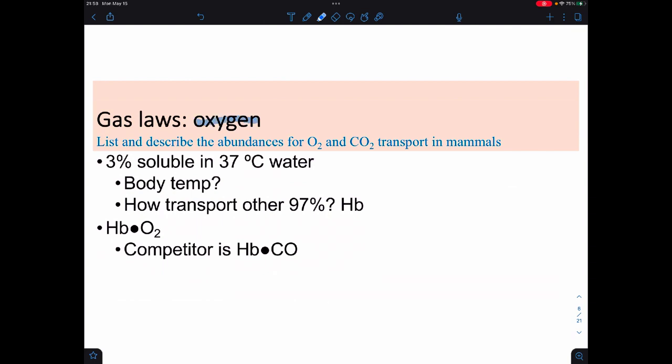If I look just at oxygen, at body temperature, which is 37 Celsius, about 3% is soluble. So how do we transport that other 97%? That's the job of hemoglobin. So this complex here is what we call oxyhemoglobin. It turns out to have a competitor in carbon monoxide, which is actually a respiratory poison.